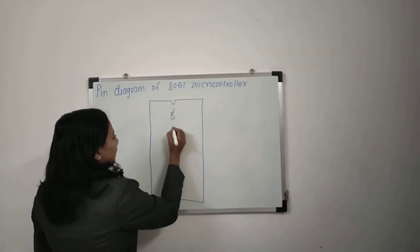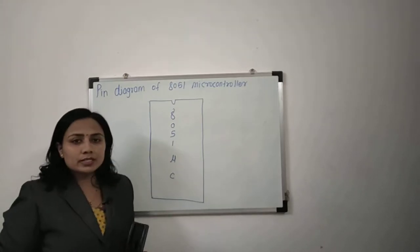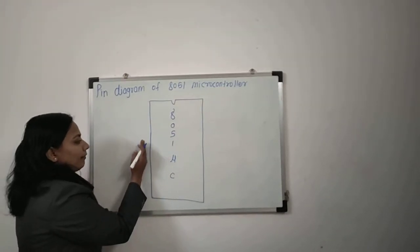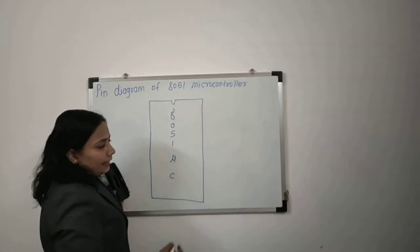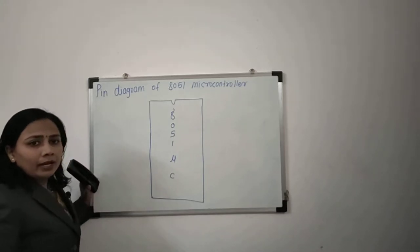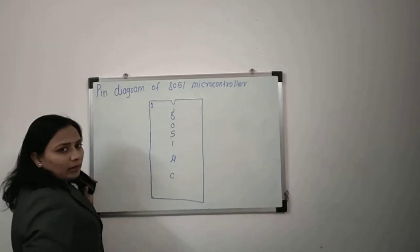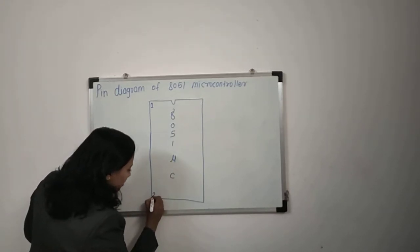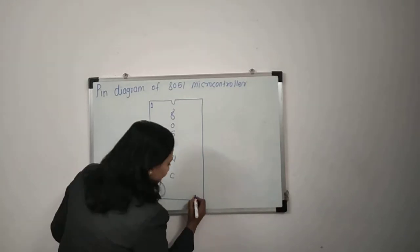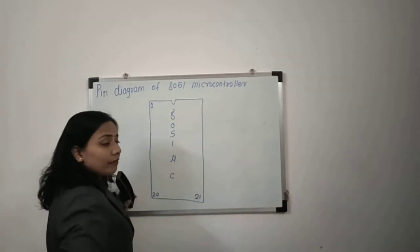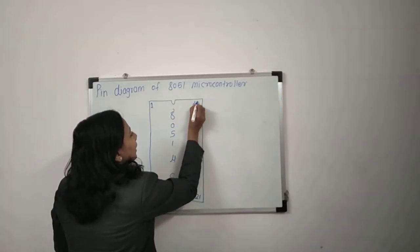This 8051 microcontroller is a 40-pin IC. We will have 20 pins on the left-hand side and 20 pins on the right-hand side. As we give the numbering from top to bottom, pin number 1 is at the top left and pin number 20 is at the bottom left. On the right-hand side, we start at 21 at the bottom, going up to pin 40.